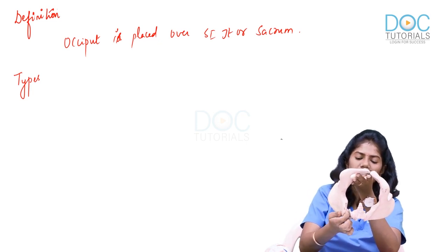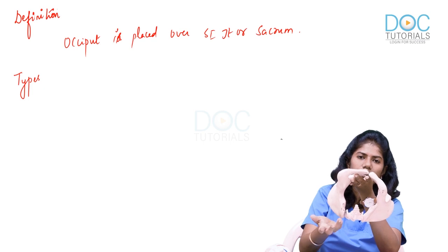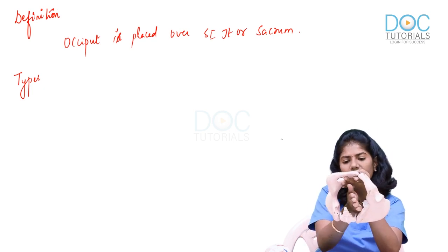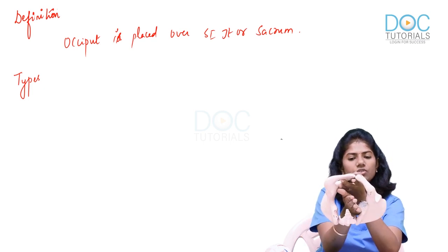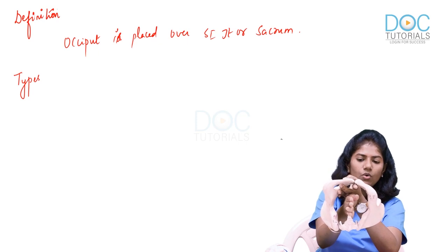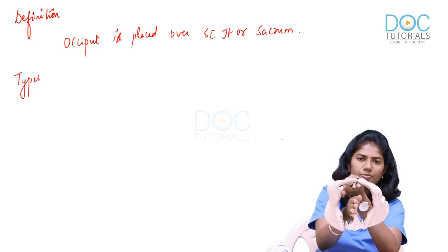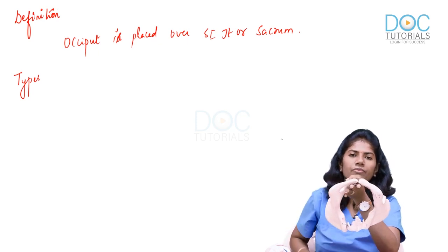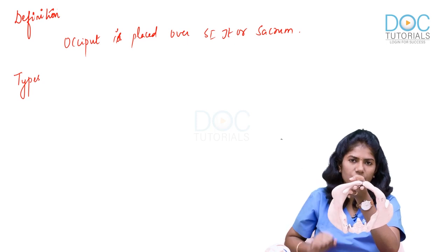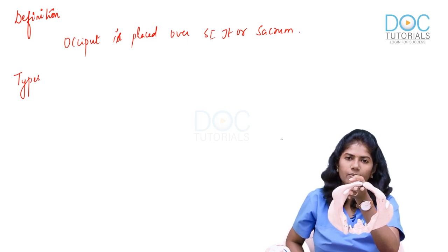This is the sacroiliac joint. If it touches the right sacroiliac joint, it's right posterior. Left sacroiliac joint, it's left posterior. Directly over the sacral promontory, it is direct posterior. So you have 8 positions in total.